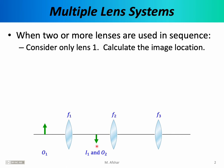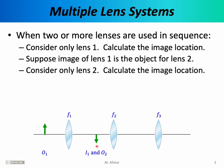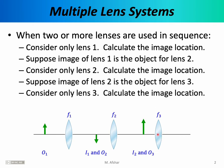We use the mirror formula or the thin lens formula again to find the image location for lens two — call it I₂. That image then becomes the object for lens three, O₃. We forget about the other lenses and concentrate on the third element, use the necessary equations to find where the image for lens three will be. That final image, I₃, is the final image in this sequence of optical elements.